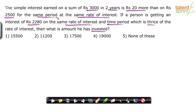The time period should be three times the rate of interest. To solve this question you must first find out the rate of interest. Once you know the rate of interest, you can find the time period as three times that value. Then, knowing the rate of interest, time period, and interest amount, you can find out the amount that was invested.